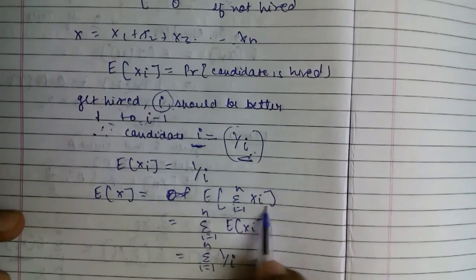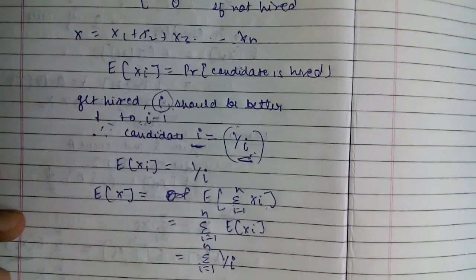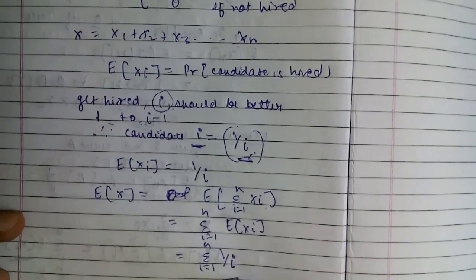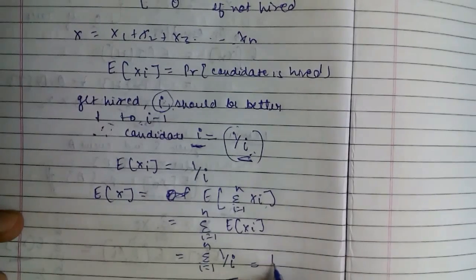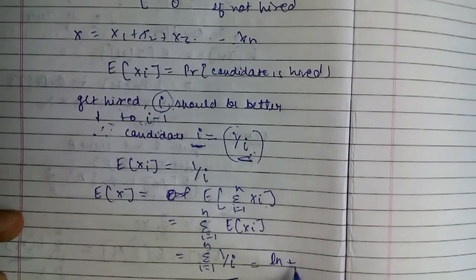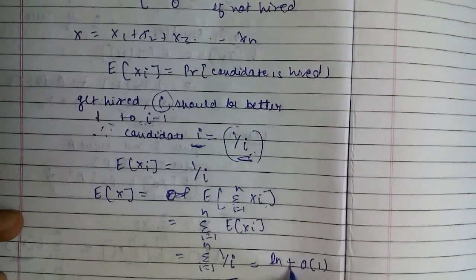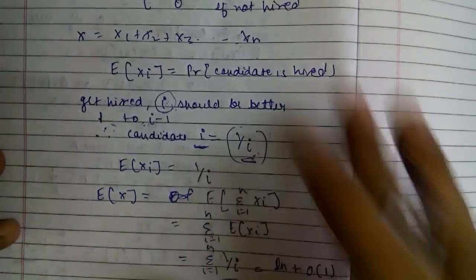By linearity, the sigma of 1 by i, the answer will be log n plus O of 1. How I get this is by...